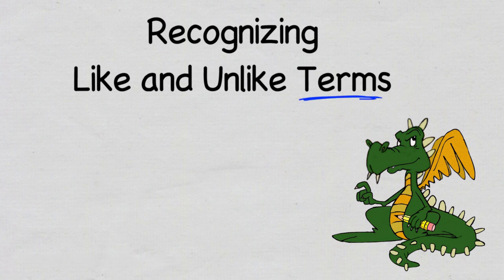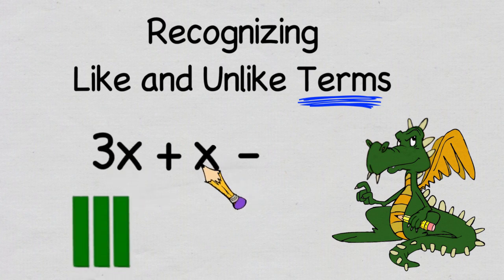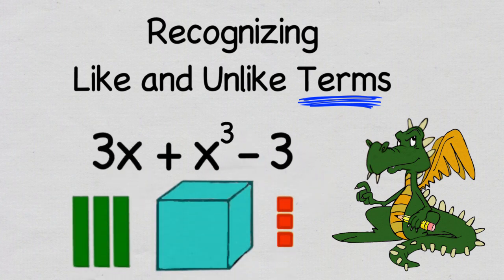So, what do we mean by the word term? Well, a term is a part of an expression that is separated by an addition or subtraction sign. For example, 3x, x to the third, and negative 3 are all examples of different types of terms.